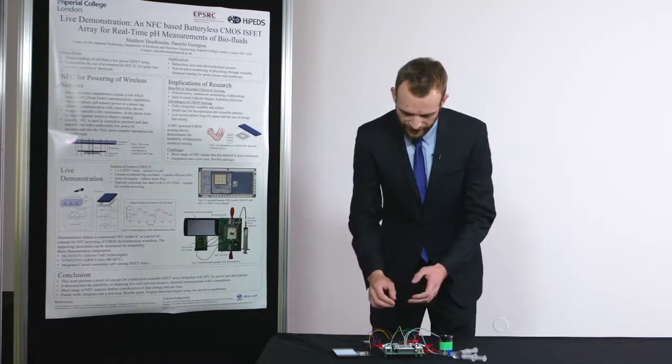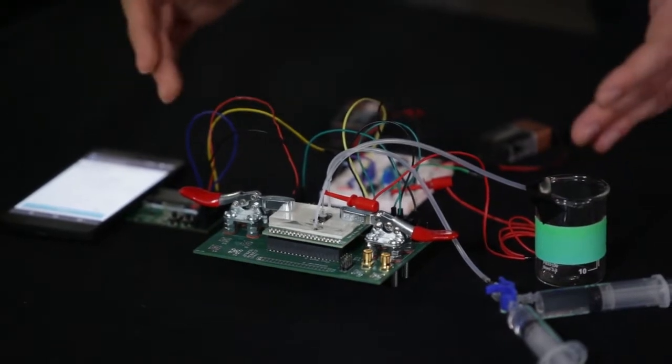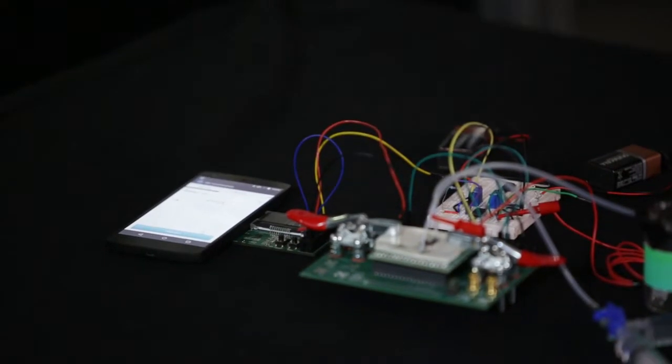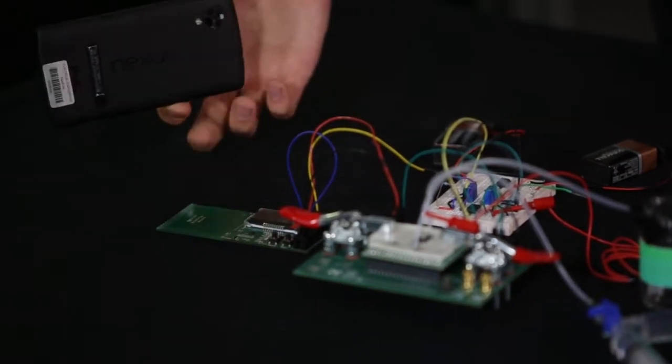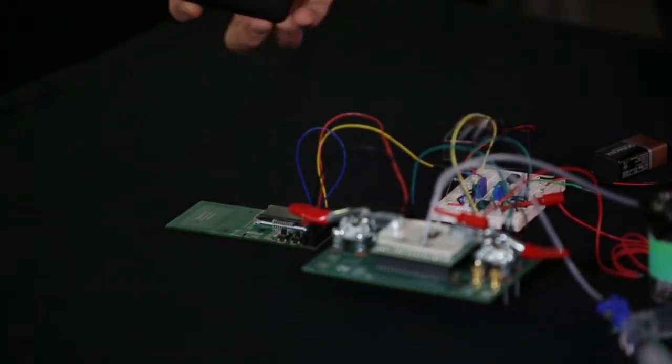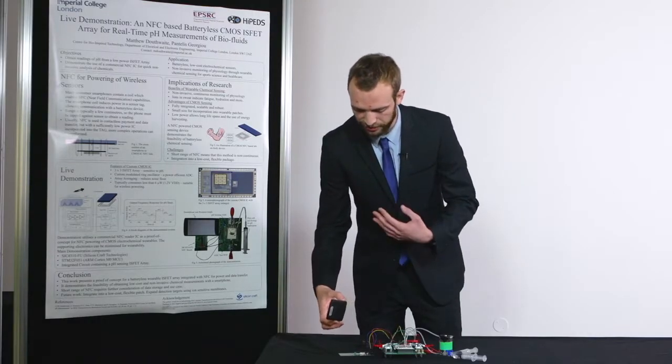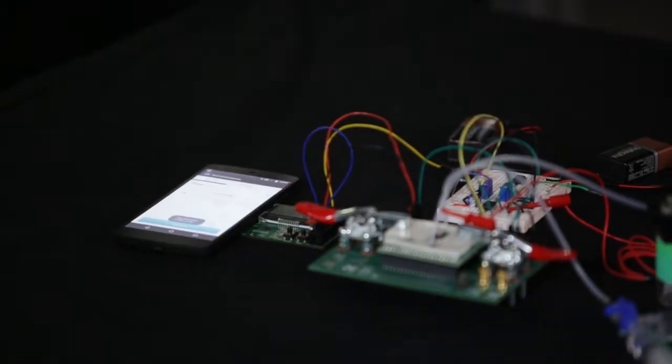The ASIC is housed on a development platform purely for testing purposes, and it is connected to a commercial NFC harvesting board from Silicon Craft. The harvesting board contains a coil which allows us to harvest energy from a standard smartphone, which uses an NFC principle—the same method as contactless payments—and it's in many smartphones.